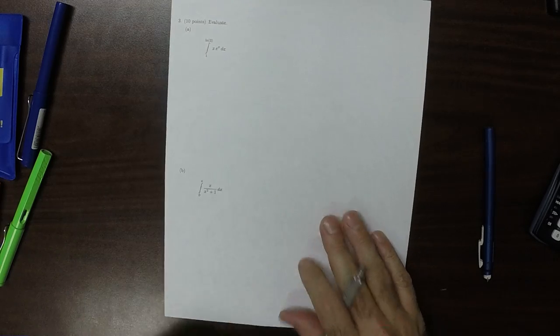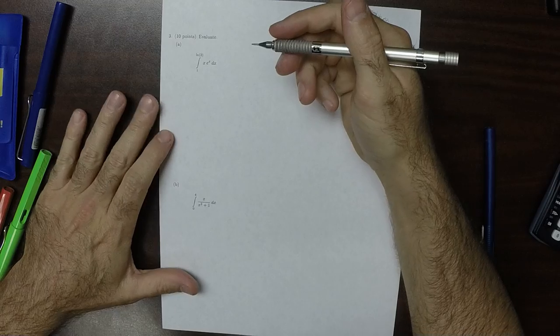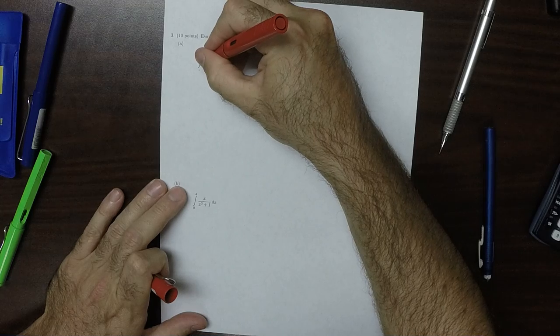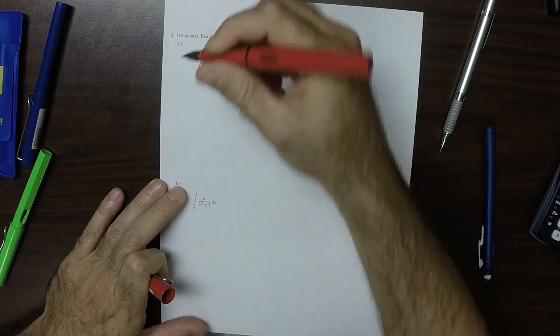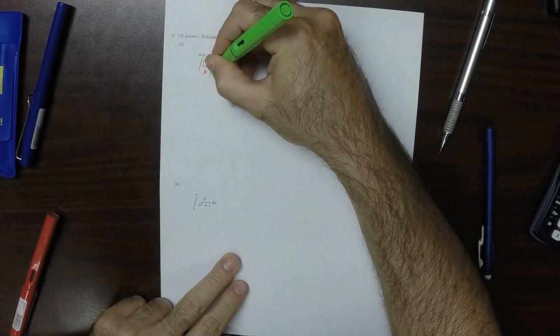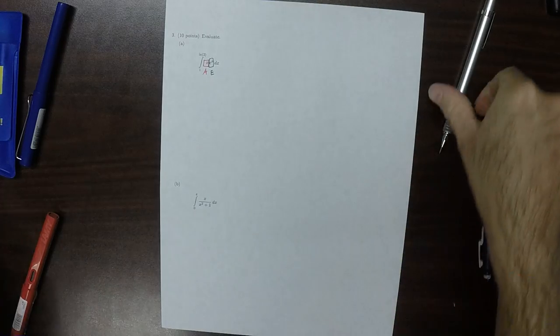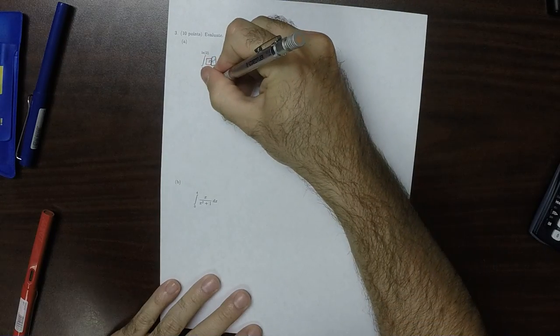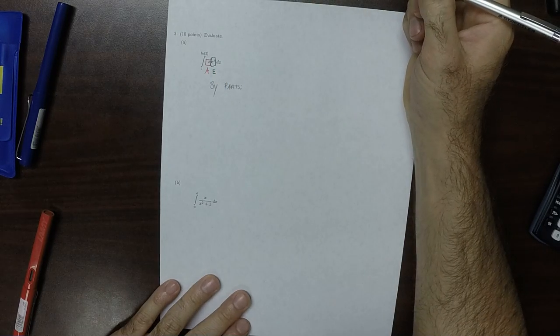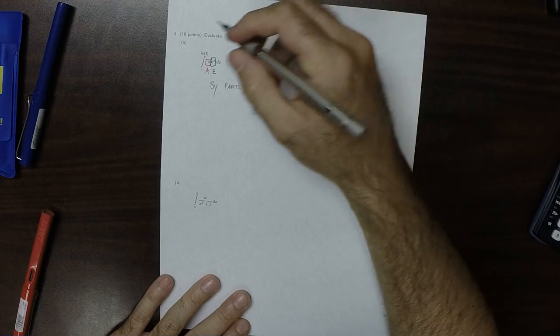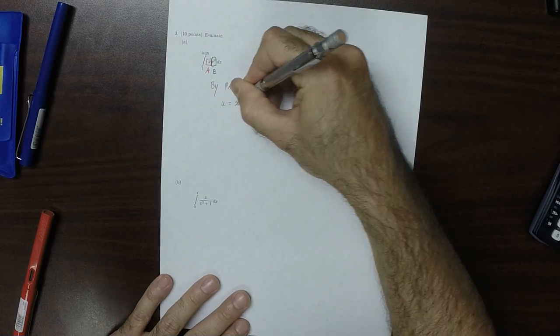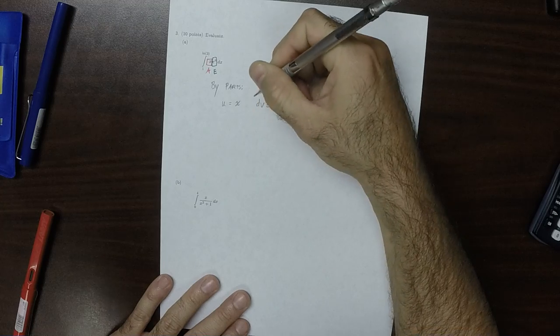And part 3. Okay, so for this one, this will require integration by parts. So that's an algebraic factor and this is an exponential factor. And so in the integration by parts heuristic, we'll have u is x, dv is everything else.